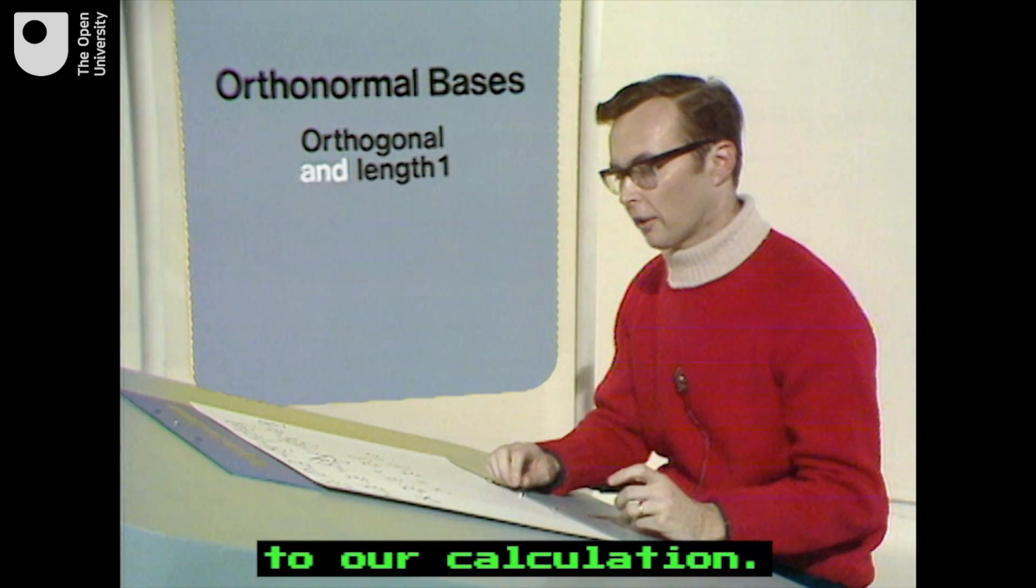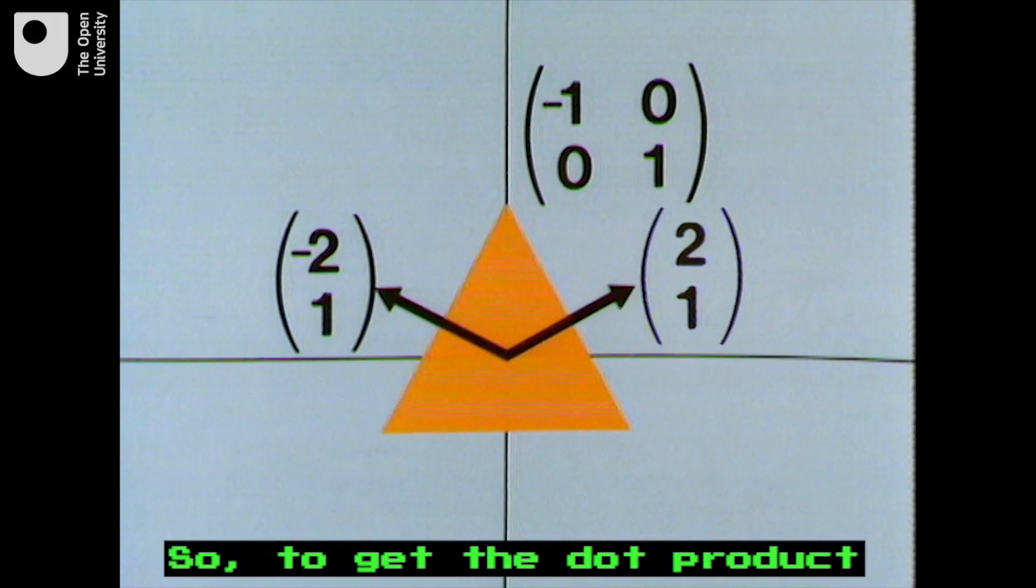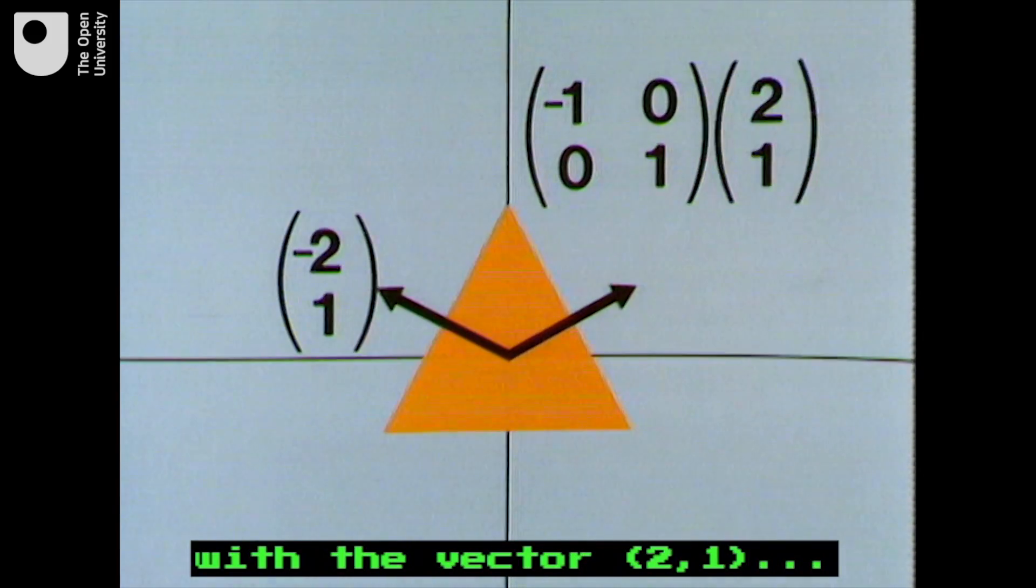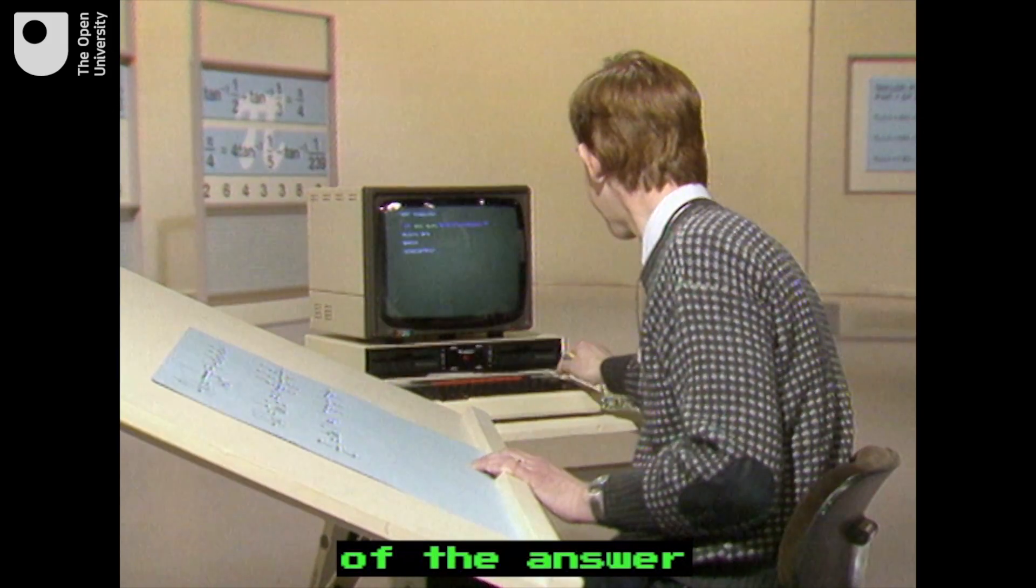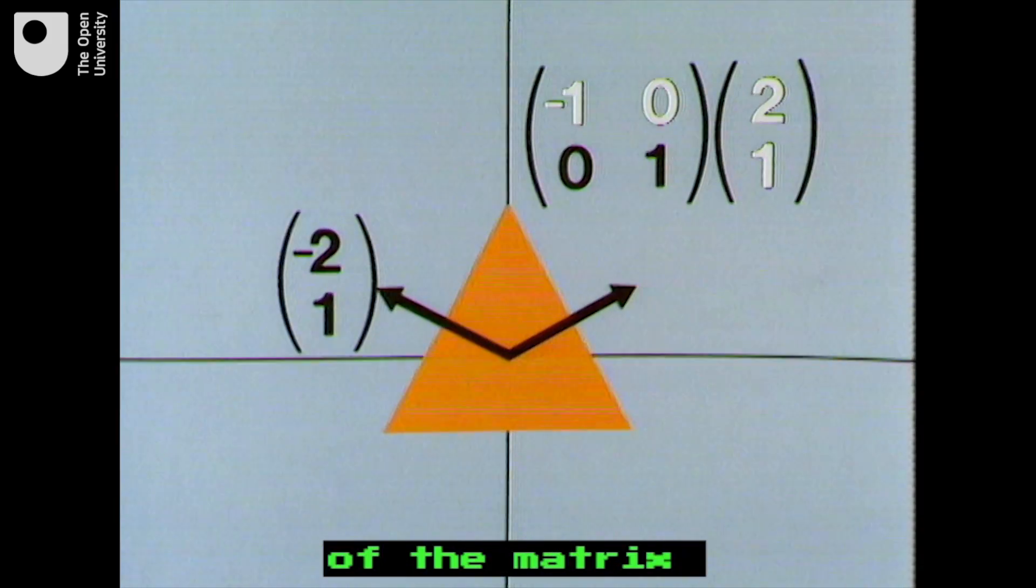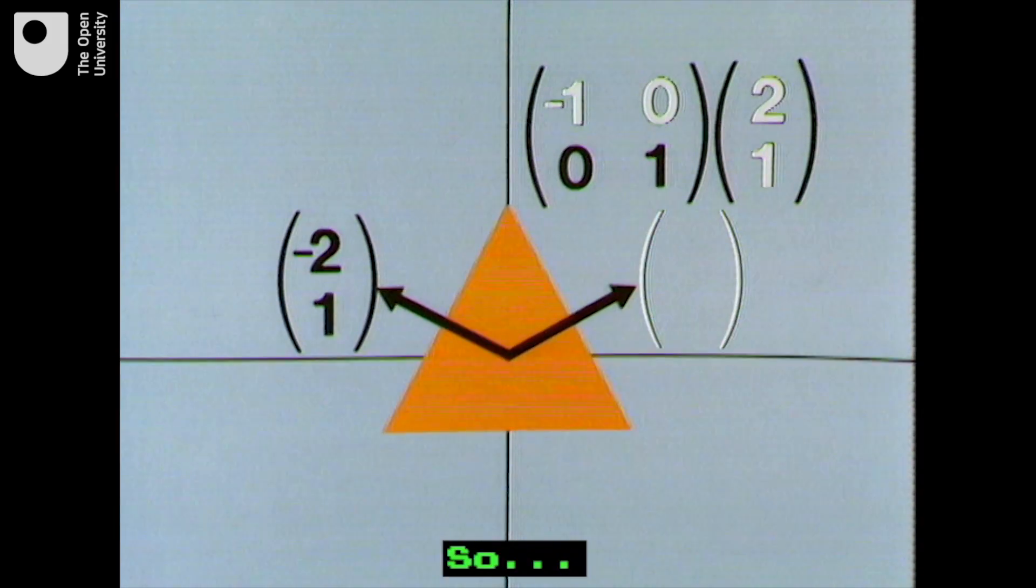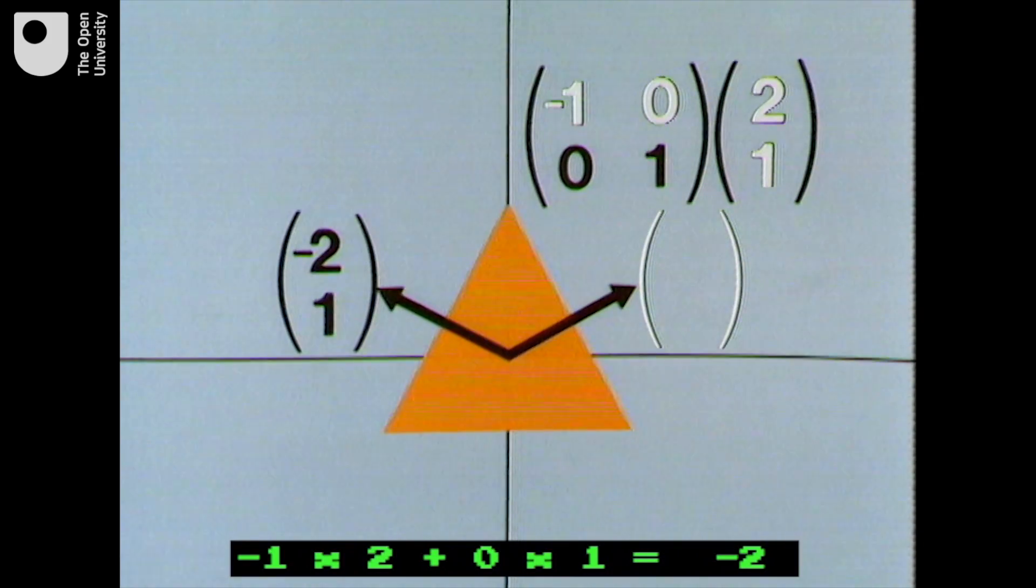Now let's get back to our calculation. To get the dot product of the matrix with the vector (2, 1), we calculate the first part of the answer by multiplying the first row of the matrix with the vector. So minus 1 times 2 plus 0 times 1, which equals minus 2.